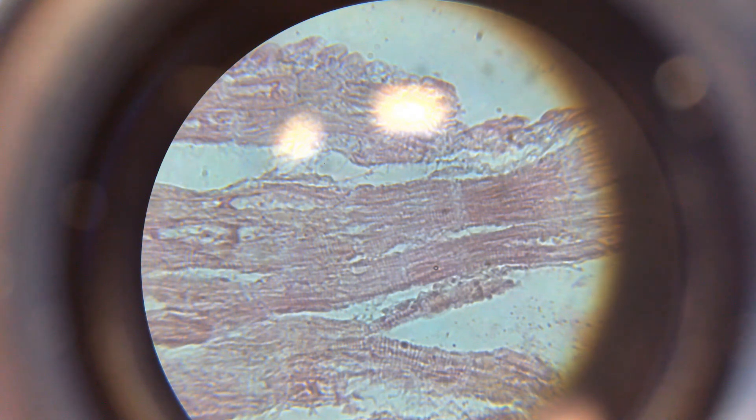What we're looking at here is cardiac muscle. You can tell that it's cardiac muscle because of the striations—that banded appearance where it goes light, dark, light, dark.